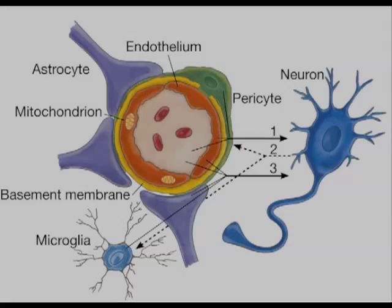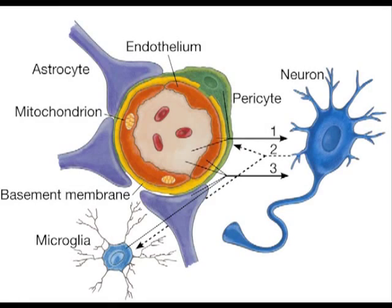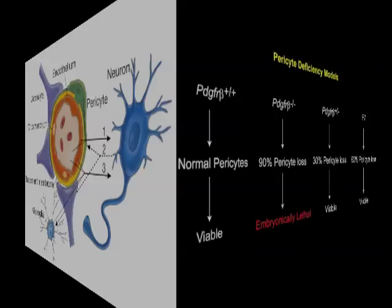I would like to introduce our paper on pericytes that is coming out in this issue of Neuron. The neurovascular unit is comprised of vascular cells, endothelial and pericytes, glia such as astrocytes and microglia, and neurons. The exact role of pericytes in the neurovascular unit in the adult brain and during brain aging remains elusive. However, it is known that pericytes play a key role in the development of cerebral microcirculation.